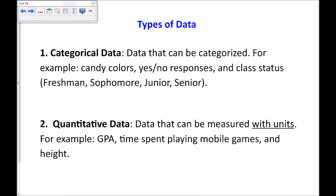First, let's discuss two types of data that we'll talk about. The first type is categorical data, and this is data that can be categorized. For example, candy colors, yes-no responses on a survey, and sometimes class status - freshman, sophomore, junior, senior - can be seen as categorical data. It fits nicely into categories.